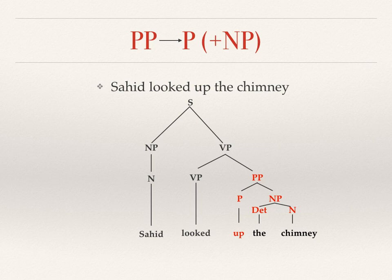The prepositional phrase is split into two sides again. The first side is the preposition for 'up,' and then the next side is the noun phrase for 'the chimney.' As usual, you can identify the determiner and noun as the components for that noun phrase.